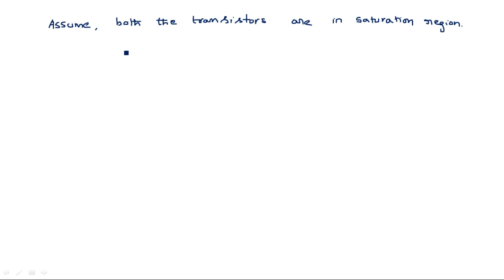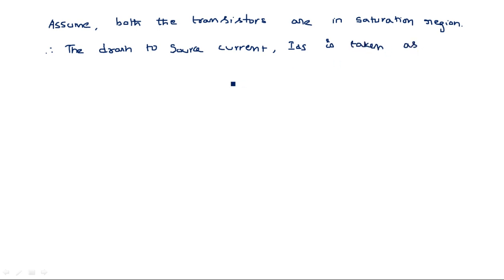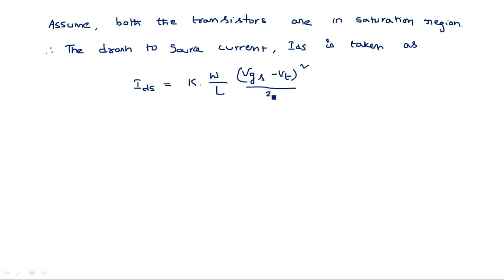As both transistors are in the saturation region, we need to consider the drain-to-source current IDS. Therefore IDS is taken as: IDS = K × (W/L) × (VGS − VT)² / 2. This is the standard equation when a transistor is operated in the saturation region.